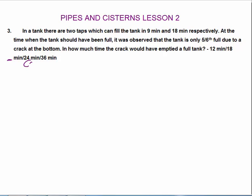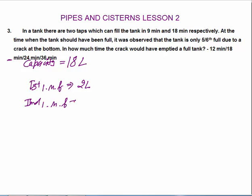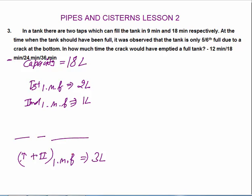Assume capacity is 18 liters, since pipe A fills C/9 and pipe B fills C/18 per minute. So pipe A's one-minute fill is 2 liters and pipe B's one-minute fill is 1 liter. Combined, both pipes fill 3 liters per minute.